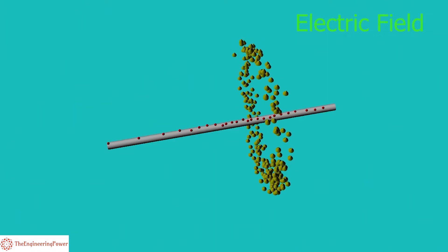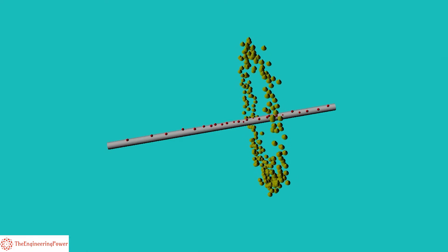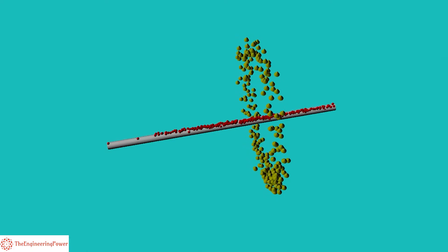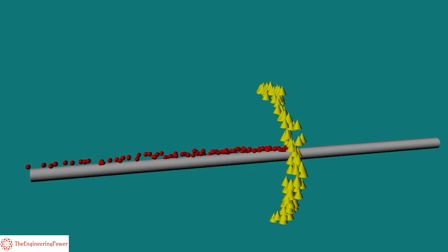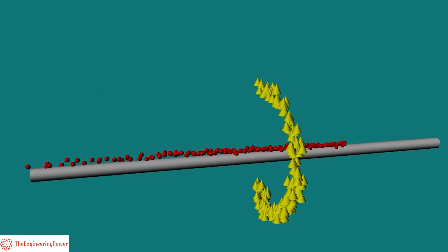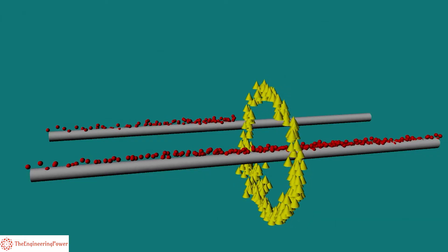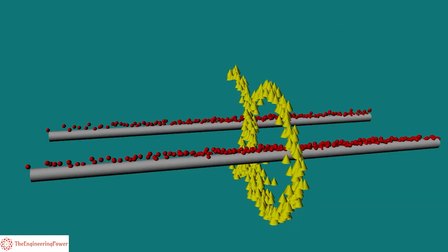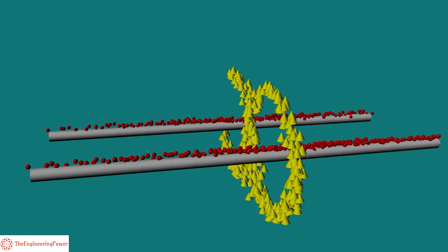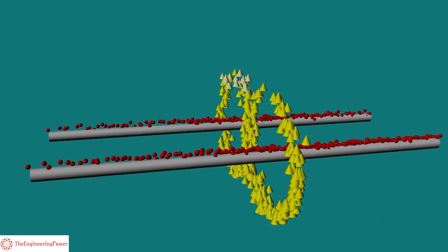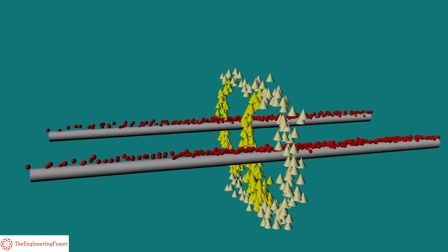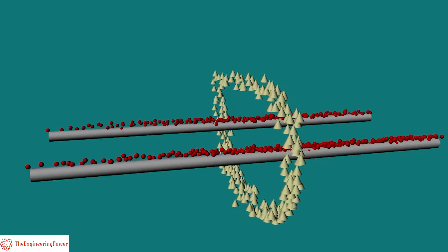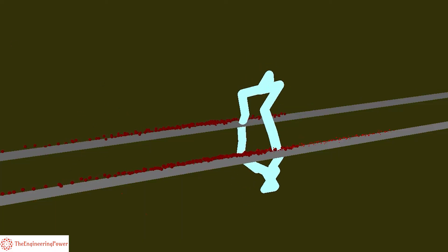Due to this electric field, the free electrons and ions in the air will experience a force. As a result of this force, the ions and free electrons get accelerated and will move in opposite directions. During this motion, the charged particles collide with each other and also with uncharged particles, and the number of charged particles increases rapidly.